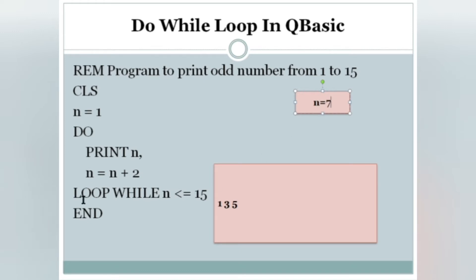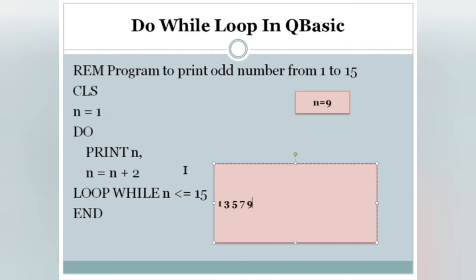It checks the condition — N is 7; 7 <= 15, condition is true. When condition is true it goes to DO and prints N — 7 is printed. Then N equals N plus 2: 7 plus 2 is 9. It checks the condition — N is 9; 9 <= 15, condition is true. It goes back to DO and prints N — N is now 9. N equals N plus 2: 9 plus 2 is 11. Then 11 <= 15 is true, so it goes to DO and prints 11.